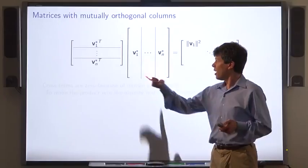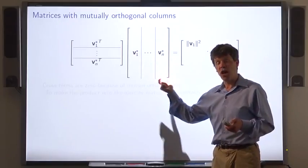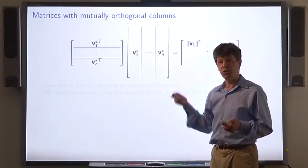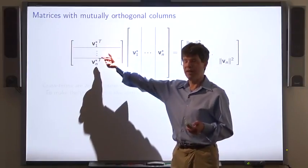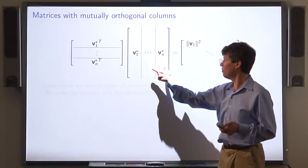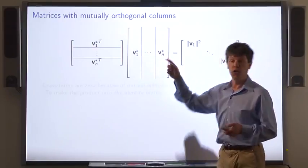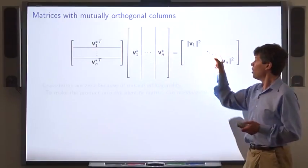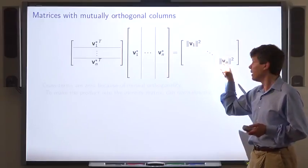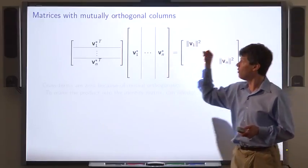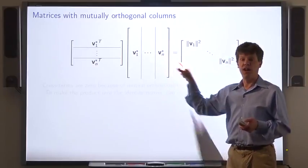Now, notice that a matrix whose columns are mutually orthogonal has a special property. If you take the transpose of this matrix and multiply it by the matrix itself, then you get a matrix whose only non-zero elements are the diagonal elements, and those diagonal elements are the squared norms of the columns.